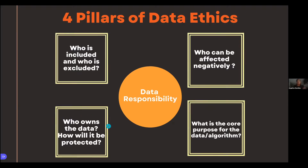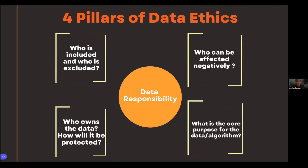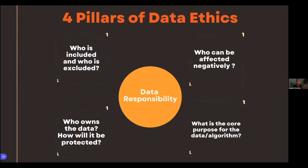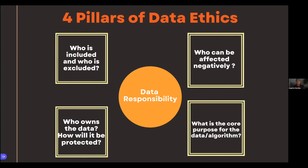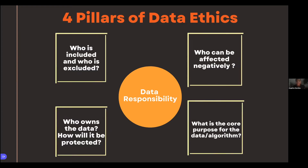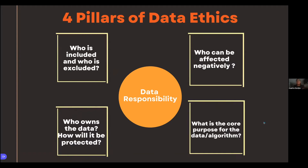When we consider privacy: who owns the data? Was this data given to you, and are you doing with the data what the person intended? So who owns the data and how will the privacy of that data be protected? For societal impact: who can be negatively impacted by your machine learning algorithm? How will this model be utilized and will it have negative impacts on society as a whole? And finally, intent: what is the core purpose for doing this data model in the first place? We want to think about these four pillars — bias, privacy, societal impact, and intent — as we transition into our scenarios.